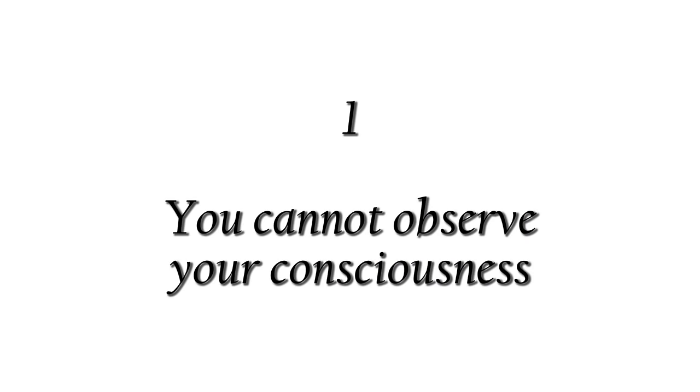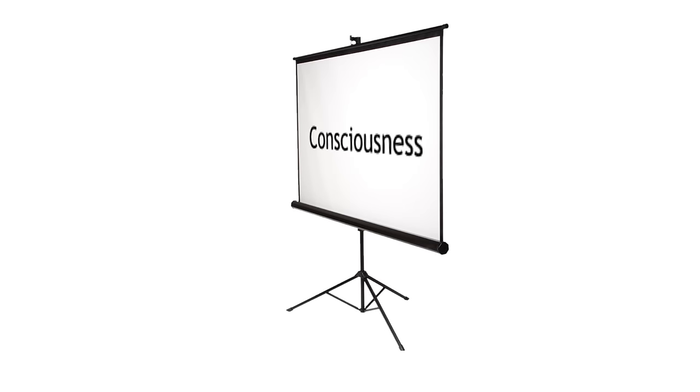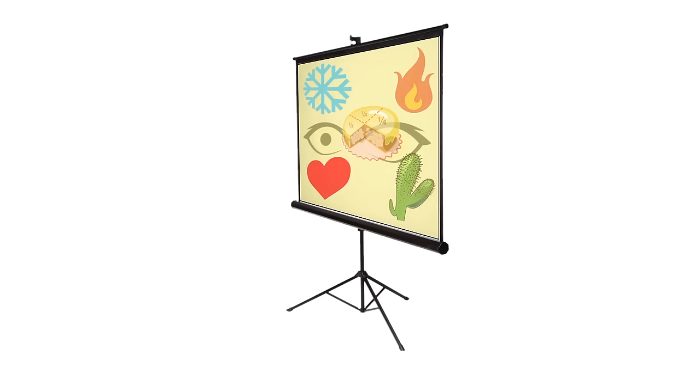Let us look at some features of consciousness which can be found out by self-observation and logical thinking. 1. You cannot observe your consciousness. And the reason is that consciousness itself is the observer. It cannot observe itself just as we cannot see our eyes. We can only observe the thoughts, the emotions, and the sensations we have and conclude by that what consciousness is.